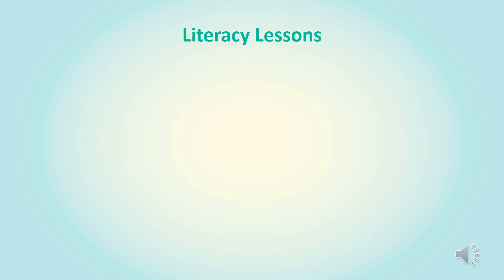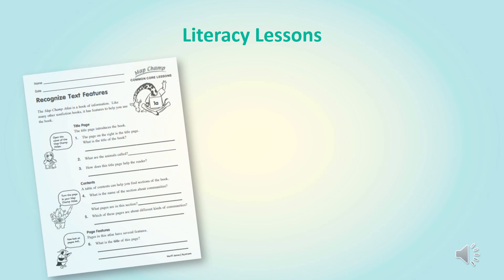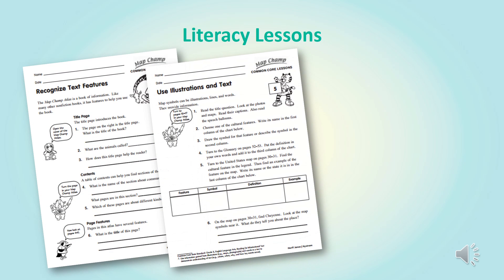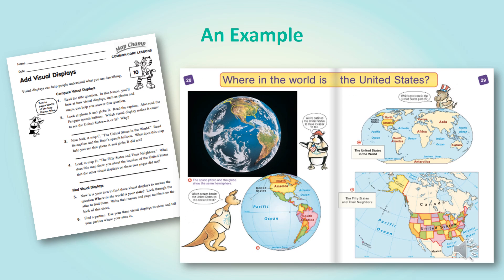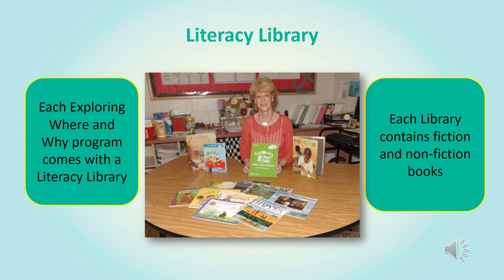Here are just a few examples of the many ways you can engage your students with the literacy lessons and your MapChamp atlases. We have recognizing text features, using illustrations and text to support one another, or having students report on a topic just covered. This example gives you an opportunity to talk about visual displays — which display option best meets the needs of a particular situation — so students are analyzing for that skill. The Exploring Where and Why program also comes with a literacy library of 12 fiction and nonfiction books. You'll be learning more about this cross-curricular approach in Session 4.